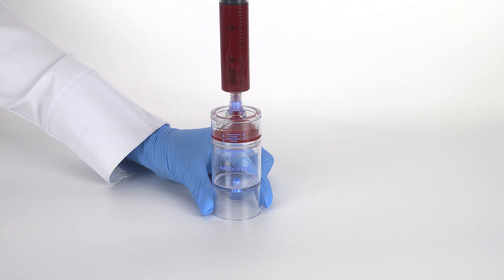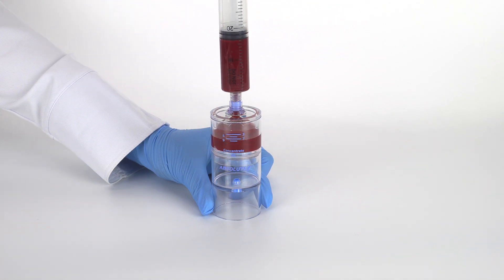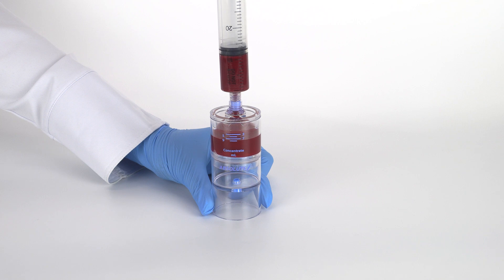Attach the 30-milliliter blood syringe to the needleless port and slowly inject the anticoagulated blood into the device.